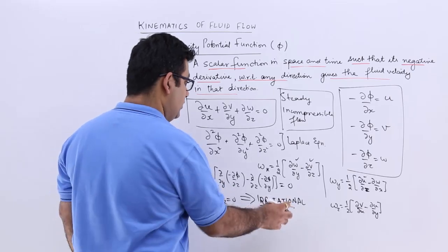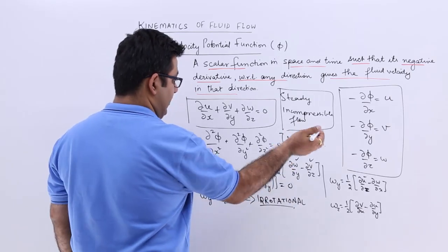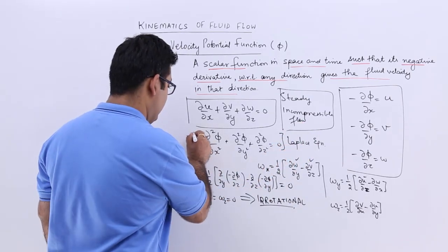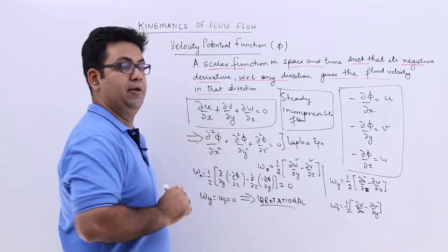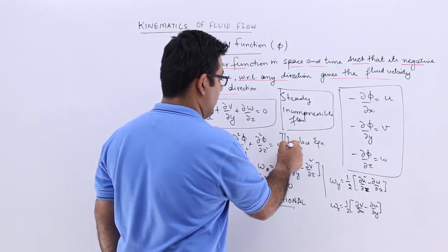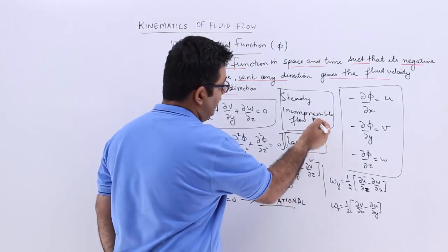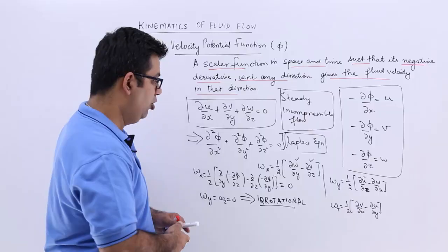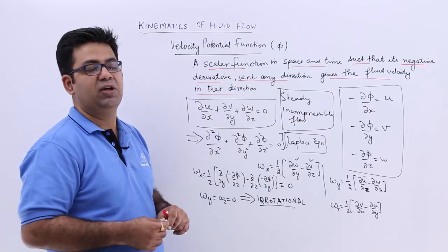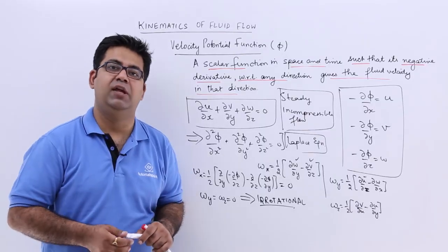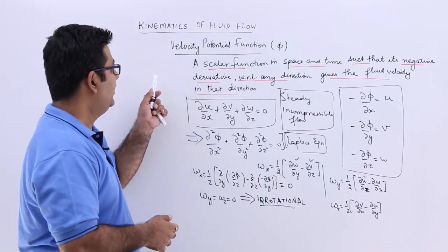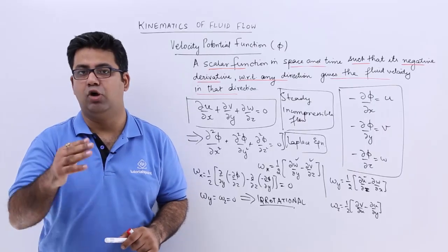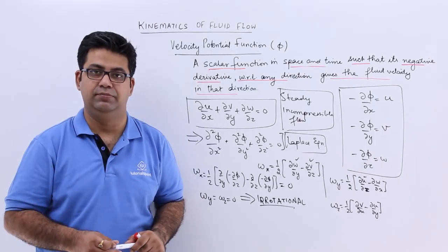So if a velocity potential function exists, the flow is irrotational, and if it also satisfies the Laplace equation, then it is a steady incompressible flow. I hope you understood the basic concept of the velocity potential function. Now let's move on to the next function and talk about the stream function.